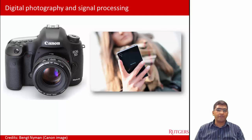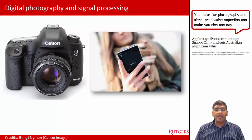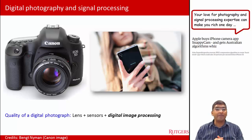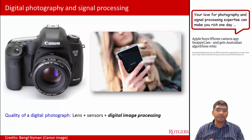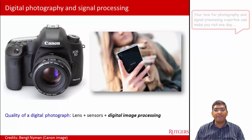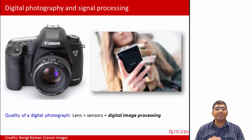Let's talk specifically about the role of signal processing in different applications. First, digital photography. All of you have taken digital photographs using SLR cameras, point-and-shoot cameras, or smartphones. The quality of the image you see after taking the photo is a strong function of the underlying signal processing algorithm. Of course, quality also depends on other factors — the lens and the sensor array — but at the end of the day, it's the image processing algorithms on your device that also determine how well the picture will look.